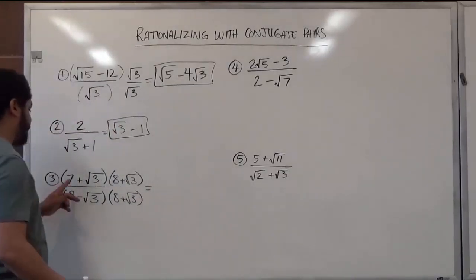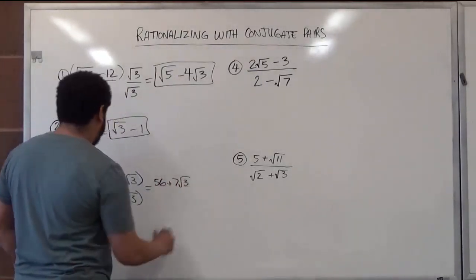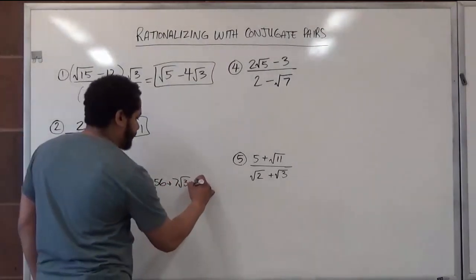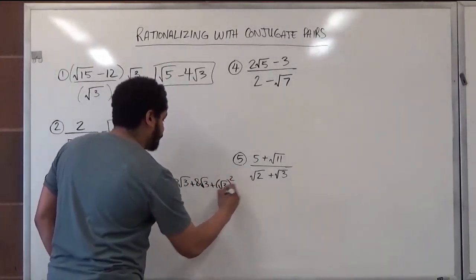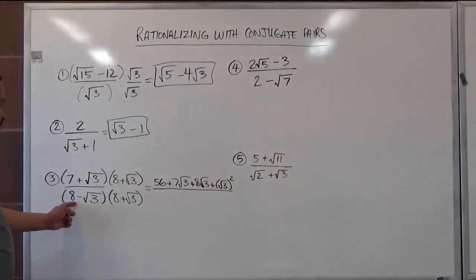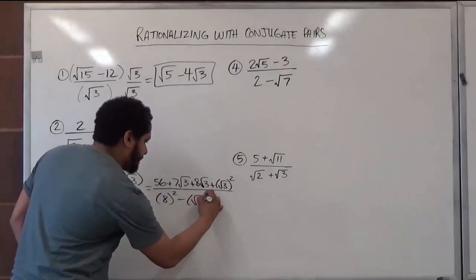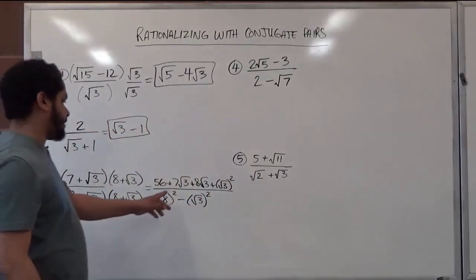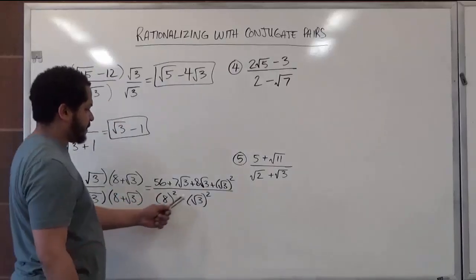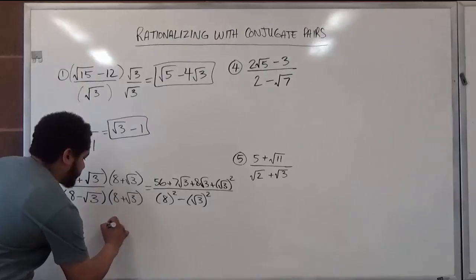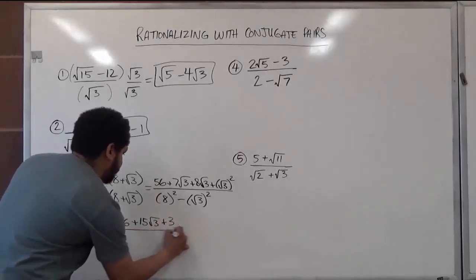This is going to take a little bit of work because the numerator is not going to simplify as simply — it should isolate into two terms, while the bottom should become one term. 7 times 8 is 56; 7 times radical 3 is positive 7 radical 3's; 8 times radical 3 is 8 radical 3's; and radical 3 times radical 3 is radical 3 squared. The denominator uses conjugate pairs: 8 squared minus radical 3 squared. We have two radicals with the same term, so 7 radical 3's plus 8 radical 3's are 15 radical 3's. Radical 3 squared is just 3, giving us 56 plus 15 radical 3's plus 3, all over 64.